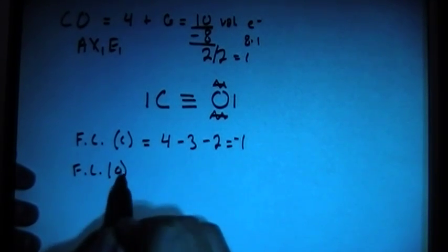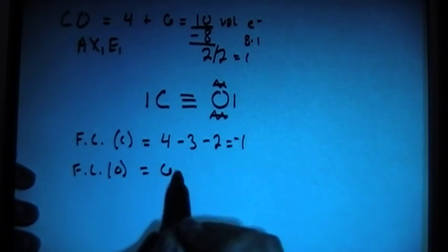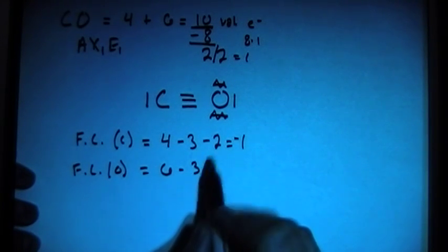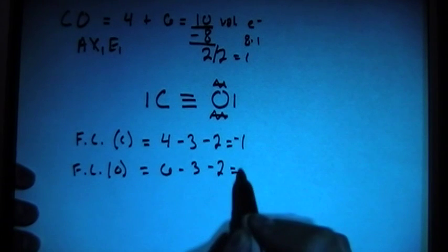Now we can check the formal charge on the oxygen, and that is going to give us 6 from the valence brought in, minus 3 for the 3 bonds, then minus 2 over here, and that's going to give us a plus 1.